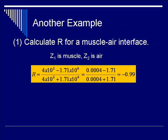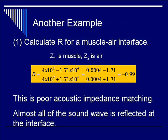We're going to go through the same calculations that we did in the previous example. Since the 10 to 6 magnitude is the same for both muscle and air, we're just going to concentrate on the unitary number. So air is very, very small, minus 1.71, divided by a very small number, plus 1.71. So basically you have minus 0.99. Almost all the signal is reflected back to the transducer. This is a very poor acoustic impedance matching example, because all the sound wave is reflected at the interface.